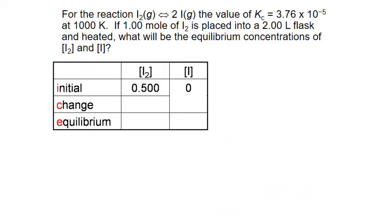Now let's look at another example — the decomposition of molecular iodine, I₂, into monoatomic iodine, I. We're given the equilibrium constant K sub C of 3.76 times 10 to the negative 5 at 1000 degrees Kelvin. Initially, we have one mole of molecular iodine placed into a 2-liter flask, and we're asked to find the equilibrium concentrations of both reactant and product.